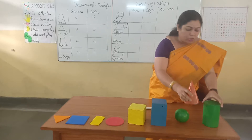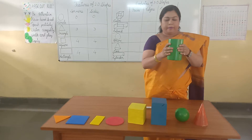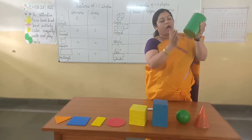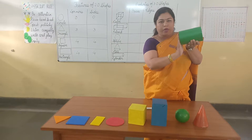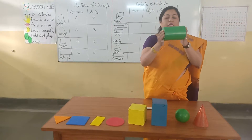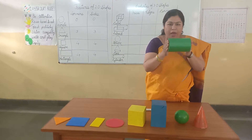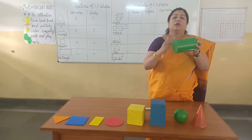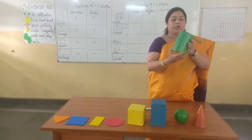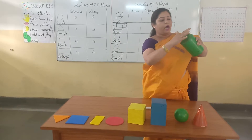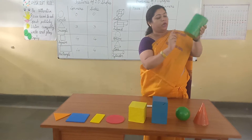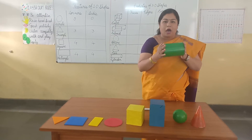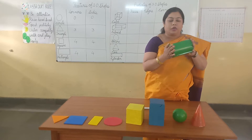The next shape is a cylinder. Cylinder has 3 faces — 2 flat faces and 1 curved face. It has 2 edges, and both the edges are circular.